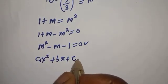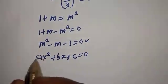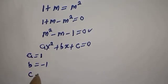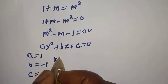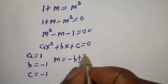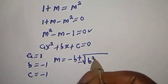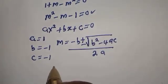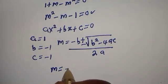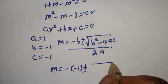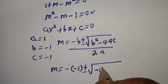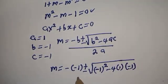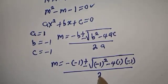Let's solve this using the quadratic general formula: as² + bs + c = 0. From our equation, a is equal to 1, b is equal to minus 1, c is equal to minus 1. Then m is equal to minus b plus or minus square root of b squared minus 4ac, all over 2a. Substituting: m equals minus of minus 1 plus or minus square root of minus 1 squared minus 4 times 1 times minus 1, all over 2 times 1.